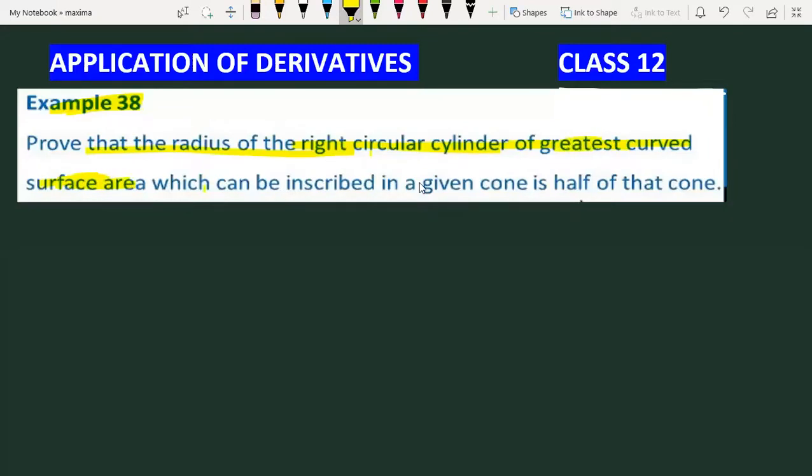Which can be inscribed in a given cone is half of that cone. Radius of cylinder is half of that of the cone. So, let's make a figure.